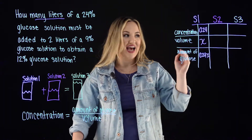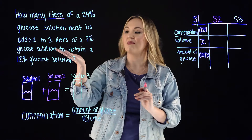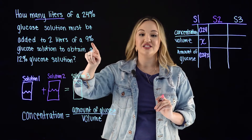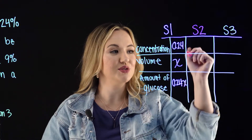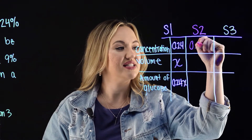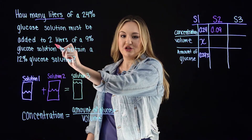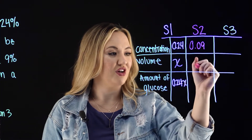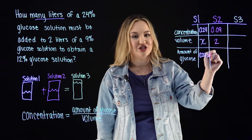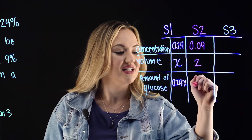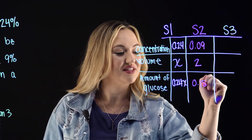For solution two, it's a 9% glucose solution, so 9% as a decimal is 0.09. The volume is given as 2 liters. And the amount of glucose is concentration times volume: 0.09 times 2, which equals 0.18.